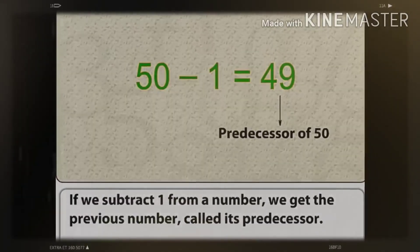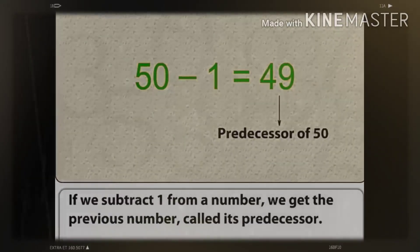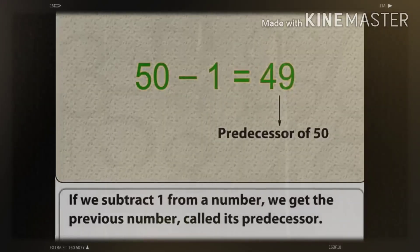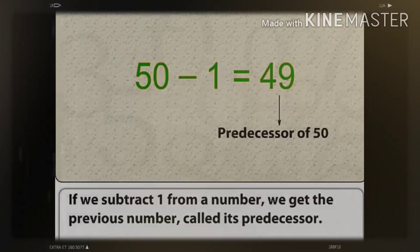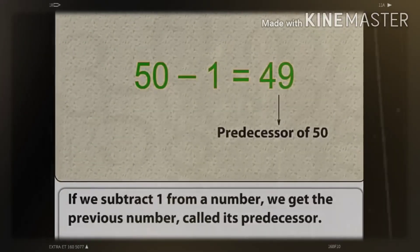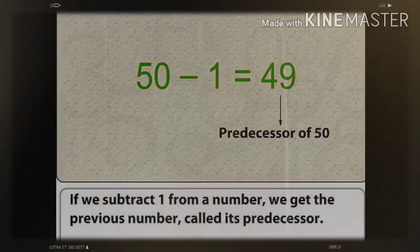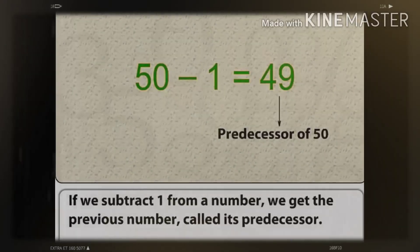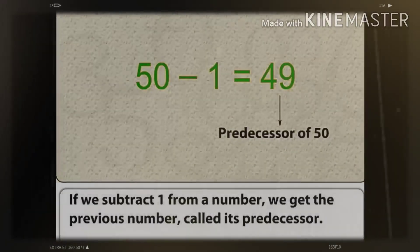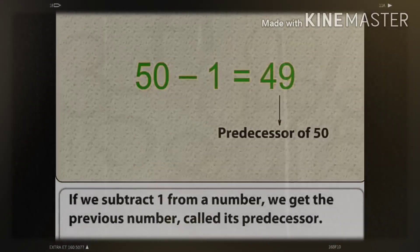So 49 comes before 50. 49 is the predecessor of 50 because 49 comes before 50.